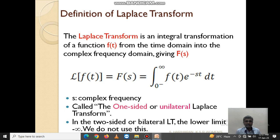Here, it is called the one-sided or unilateral Laplace transform because the lower limit is 0. If the lower limit is minus infinity, then that type of Laplace transform is said to be two-sided or bilateral Laplace transform.